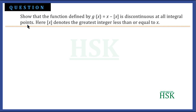We have to show that the function is discontinuous at all integral points. This means that if we take any integer — 0, ±1, ±2, ±3, and so on — and check the continuity at that point, we will find that g(x) is discontinuous at every integral value.